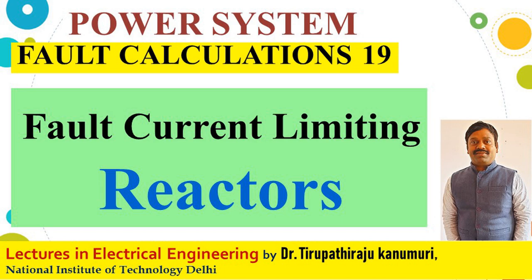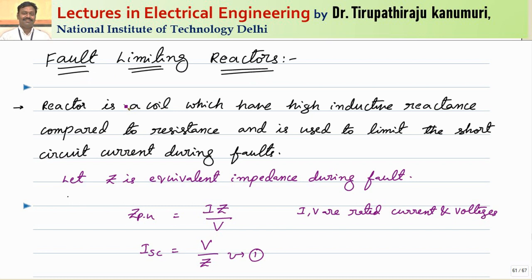Hi all. Today we are going to discuss about fault limiting reactors. A reactor is a coil which has high inductive reactance compared to resistance, and it is mainly used for limiting the short circuit currents during faults.